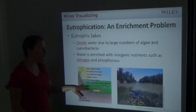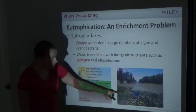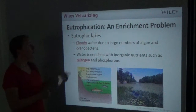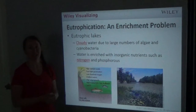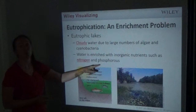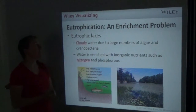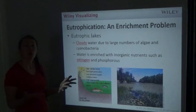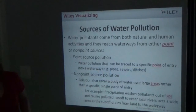Eutrophic lakes suffer from eutrophication — they tend to have cloudy water due to large numbers of algae and cyanobacteria. You can barely even see the water there's so much growth. The water is enriched with inorganic nutrients such as nitrogen and phosphorus, both of which come from fertilizers. All that algae and cyanobacteria use up the oxygen in the water, and then the fish can't survive.